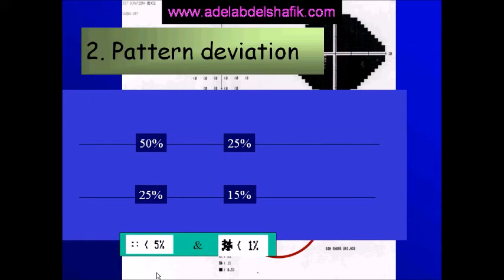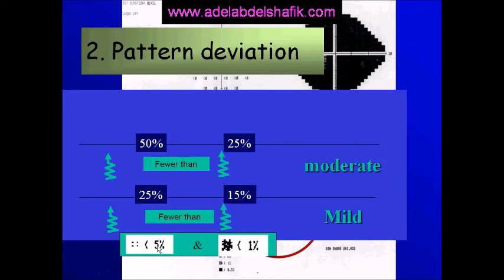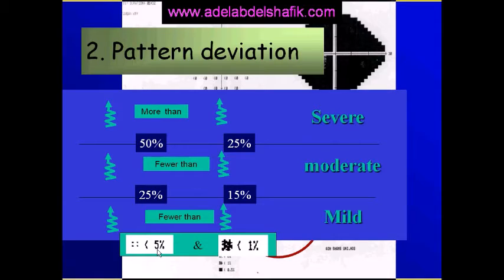Using the pattern deviation, calculate the number of points with probability 5% and 1%. If points with probability 5% are less than 25% and those with 1% are less than 15%, the glaucoma is mild. If the 5% points are more than 25% but less than 50% and the 1% points are more than 15% but less than 25%, it's moderate glaucoma. If the 5% points are more than 50% and the 1% points are more than 25%, it's severe glaucoma.